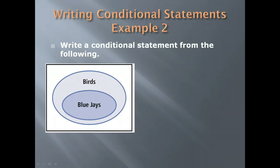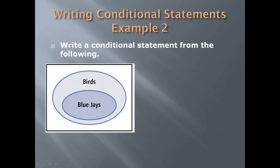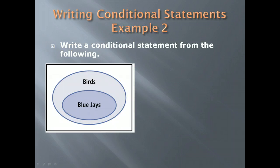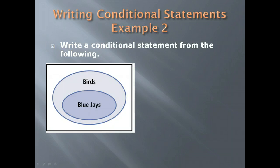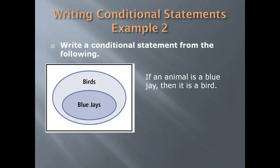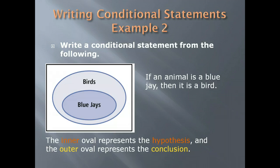Using a Venn diagram, we can write a conditional statement from a picture. Notice that blue jays are a subset of birds because they are a kind of bird. So we can make the statement: If an animal is a blue jay, then the animal is a bird. The inner oval represents the hypothesis; the outer oval represents the conclusion.